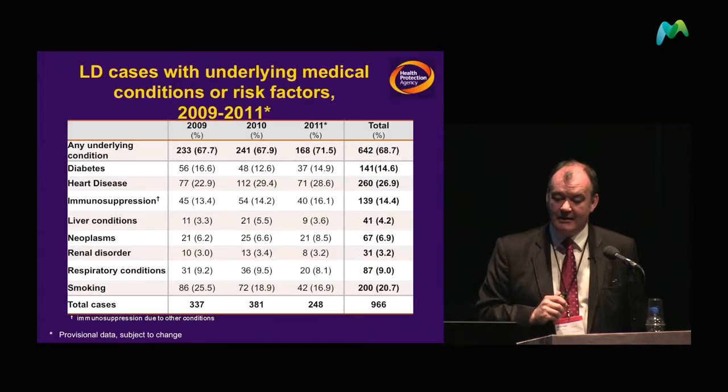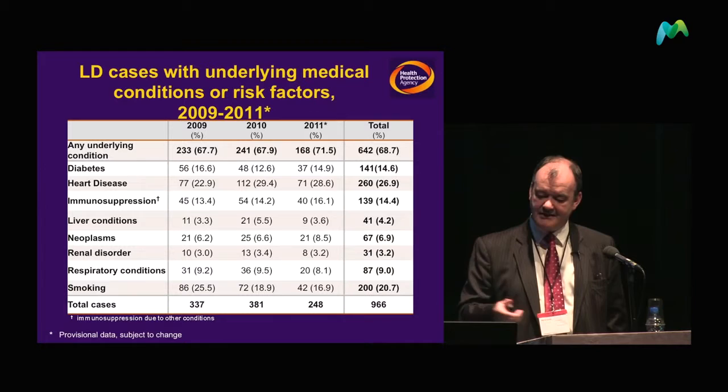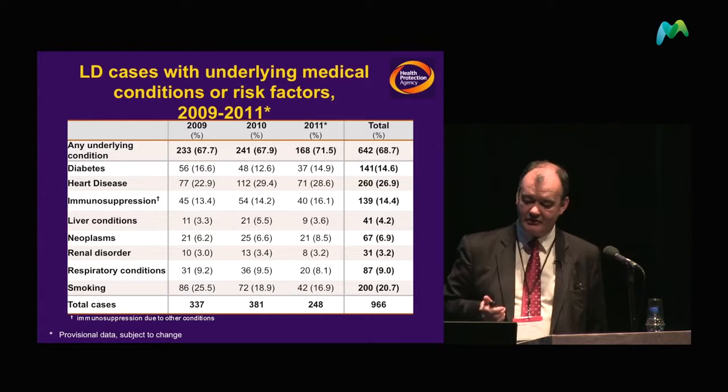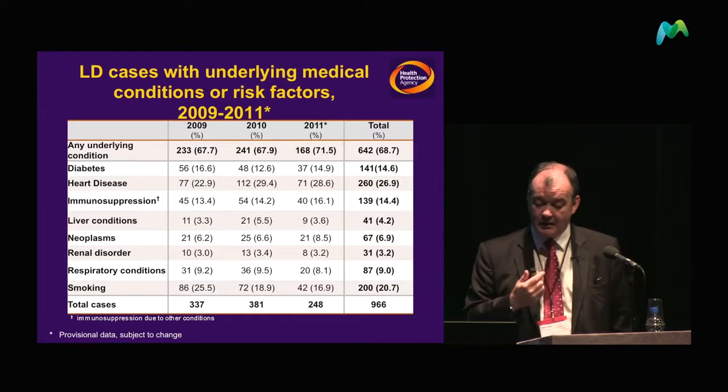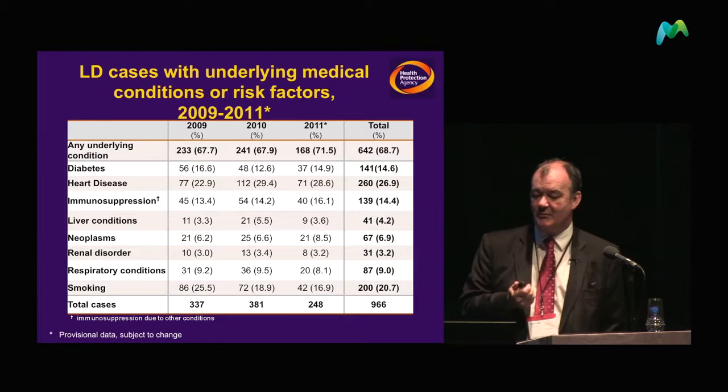With Legionella, underlying medical conditions as well as age are an important factor. The two things to highlight are heart disease and smoking. Other factors — variably associated — include diabetes and immunosuppression. People with heart disease and smokers are probably more likely to get Legionnaires' disease if Legionella is present.